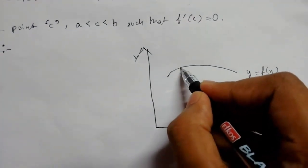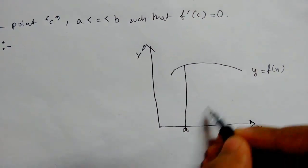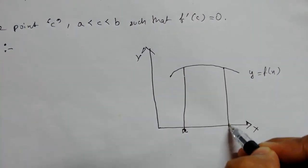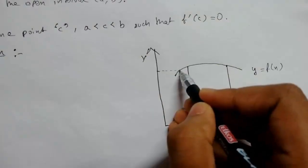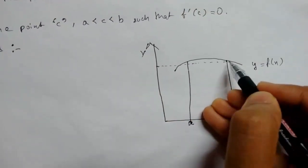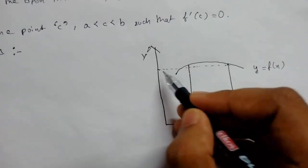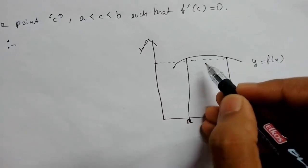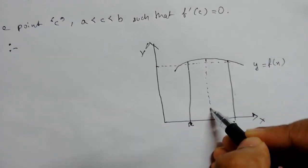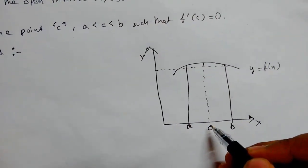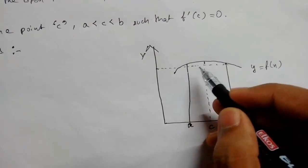Which is continuous in the closed interval [a, b] and derivable in the open interval (a, b). We see that f(a) equals f(b), so all three conditions get satisfied. From Rolle's Theorem we get a point, say c, which belongs to (a, b) such that f'(c) will be zero.